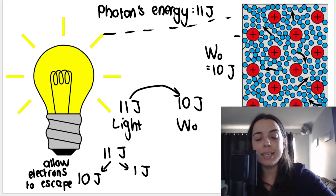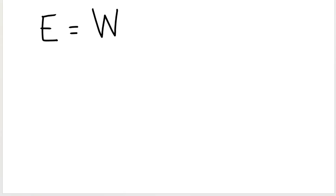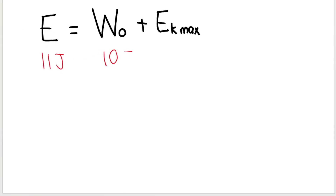So we can create a formula that looks like this: the energy of the light equals the work function plus the maximum kinetic energy, E_k max. This is the photoelectric equation. In my example, if the energy of my light is 11 joules and the work function is only 10 joules, that means one joule will be given to allow the electrons to move faster.